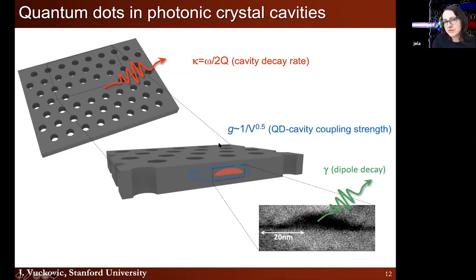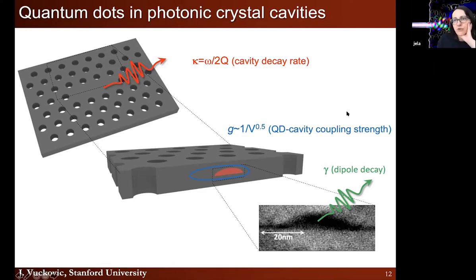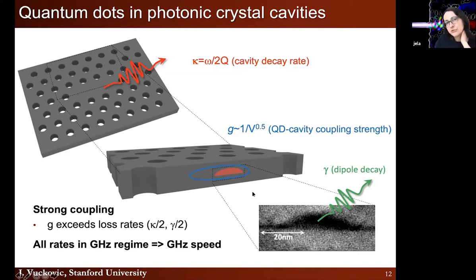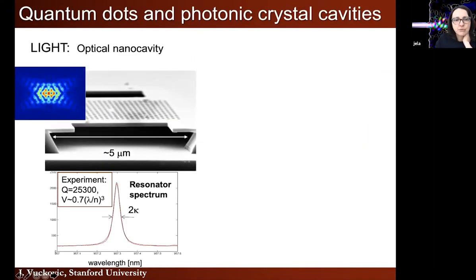Photonic crystal cavities can also have decent quality factors, meaning the cavity field decay rate ω/2Q can be pretty low. It's not as large a Q-factor as some other cavity types, but there is a good trade-off between Q-factor and mode volume. The emitter itself has a dipole decay rate γ; the linewidth of the emitter is 2γ. For these quantum dots, the emitter linewidth is much smaller than the cavity field decay rate, so to reach strong coupling you need G > κ/2.